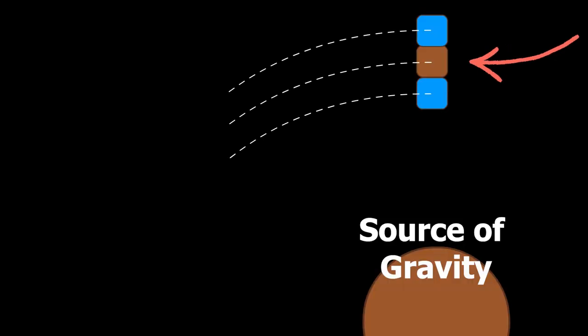Now consider these three blocks revolving around a source of gravity. Because gravitational force on the closest block is a little stronger, it turns a little sharply.